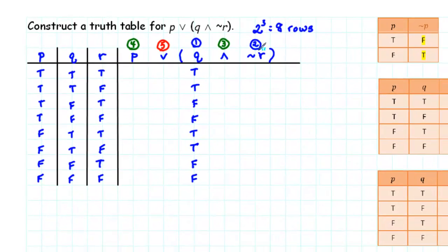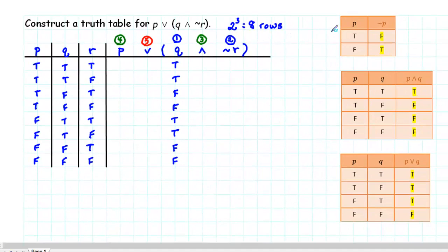In order to fill in the negation of R column, what we need to keep in mind is that if something is not true, then it is false. And if something is not false, then it is true. So for example, in our first row, we have R is true, therefore not R is false. In the second row, we have R is false, therefore not R is true.